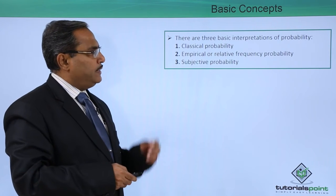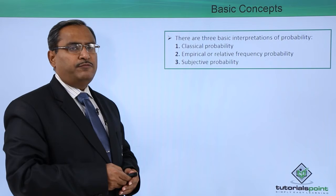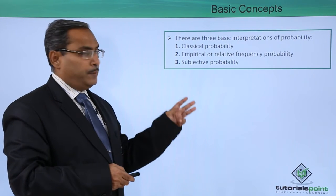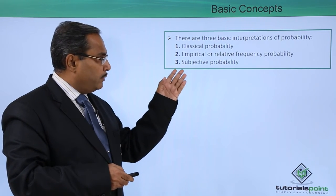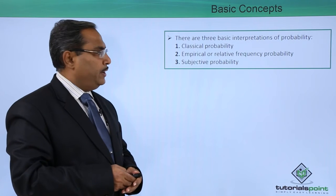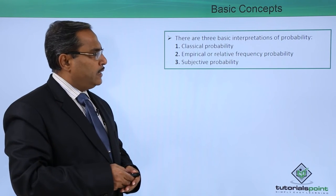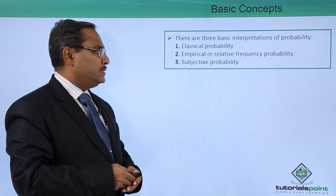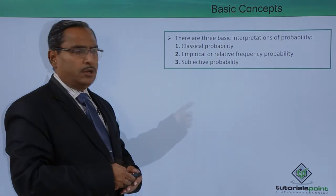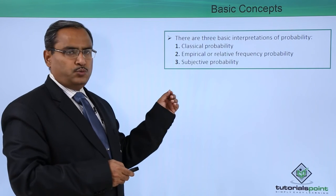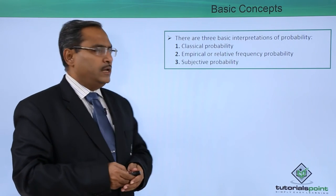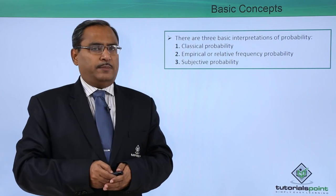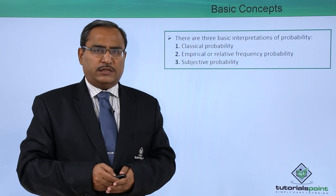There are three basic interpretations of probability. One is classical probability, next one is empirical or relative frequency probability, and last one is subjective probability. In the next three videos, we are going to discuss all these probabilities with some examples. Thanks for watching this video.